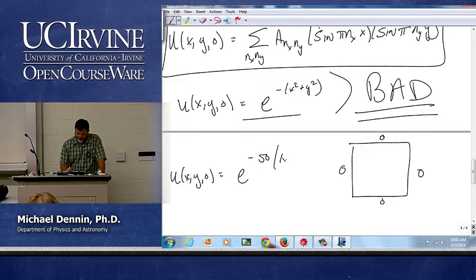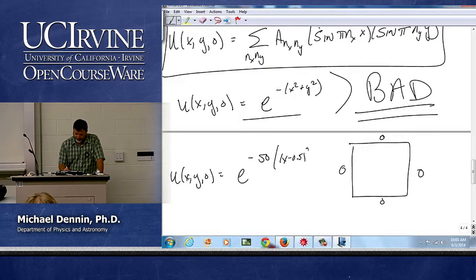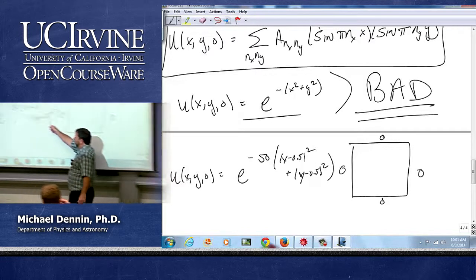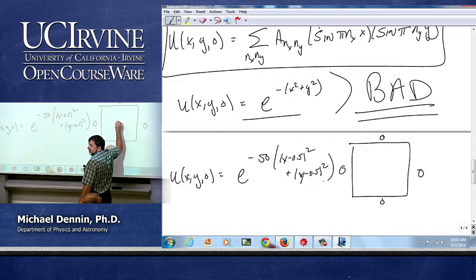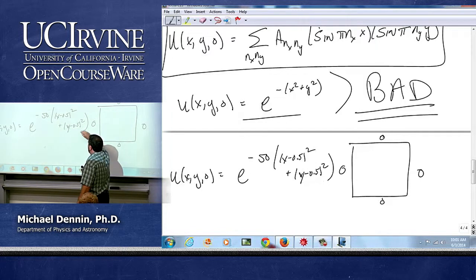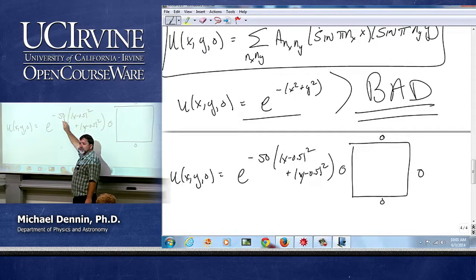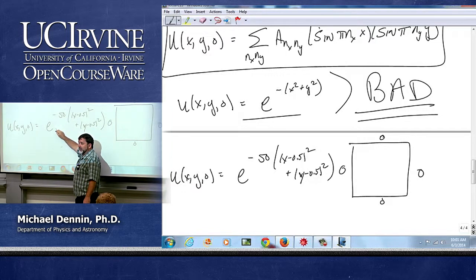50 times x minus 0.5 squared plus y minus 0.5 squared. What have I done? I've centered it at half and a half, so now its peak is here at one half, one half. It's still 1, so that's good. The minus 50 is going to force it to decay very quickly.